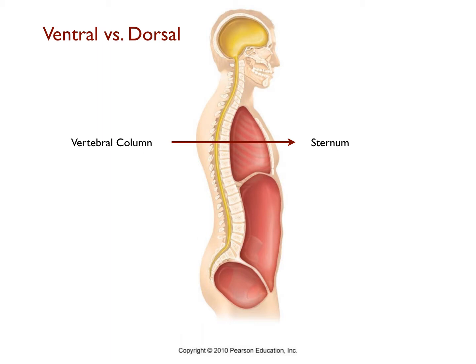Let's do another example. We want to know where the heart is in relation to the spinal cord. The arrow in this example will point toward the heart, the structure we're looking for. Because the arrow is pointing toward the front of the body, we say that the heart is ventral to the spinal cord. Going in the opposite direction, we say that the spinal cord is dorsal to the heart.